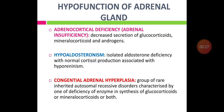Adrenocortical deficiency, or adrenal insufficiency, is characterized by decreased secretion of glucocorticoids, mineralocorticoids, and androgens. Hypoaldosteronism is a condition of isolated aldosterone deficiency with normal cortisol production, also with hyporeninaemia. Congenital adrenal hyperplasia is a group of rare inherited autosomal recessive disorders characterized by deficiency of one of the enzymes in the synthesis of glucocorticoids and mineralocorticoids, or both.